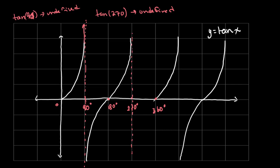One important point to remember: at 45 degrees, tan equals 1. The same goes for every 45-degree increment. For example, at 135 degrees (90 plus 45), the value is negative 1. At 315 degrees (270 plus 45), the value is also negative 1. At 405 degrees (360 plus 45), the value is 1, and so on.